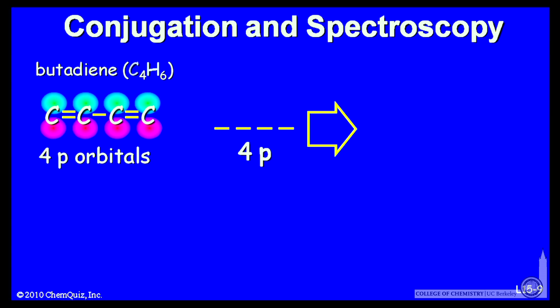Those 4 p orbitals form 4 pi molecular orbitals. They'll have a bonding orientation and energy level diagram that looks like this: 1, 2, 3, 4 pi bonding orbitals. The lowest two we'll call pi bonding orbitals, and the upper two we'll call pi antibonding orbitals.